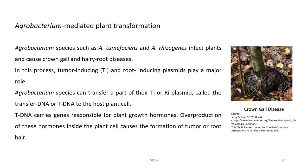We have a natural genetic engineer — the agrobacterium. Agrobacterium species like Agrobacterium tumefaciens and Agrobacterium rhizogenes infect plants and cause crown gall and hairy root diseases. In this process, the tumor-inducing (Ti) and root-inducing (Ri) plasmids play a major role. These agrobacterium species can transfer a part of the Ti or Ri plasmid called the transfer DNA (T-DNA) to the host plant cells. In application, we re-engineer these plasmids by removing their pathogenic sequences and only retaining the sequences useful for mobilizing the insert DNA into the host plant.